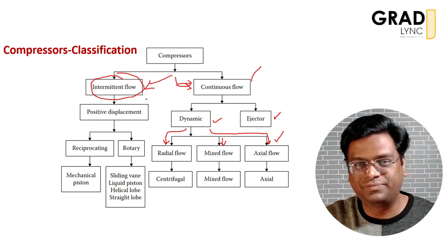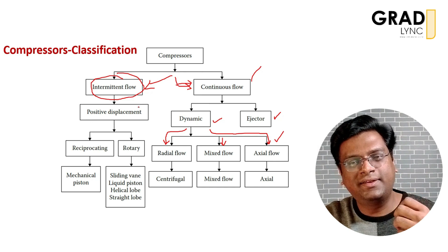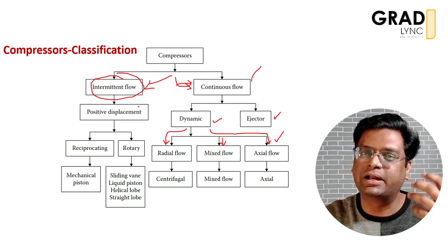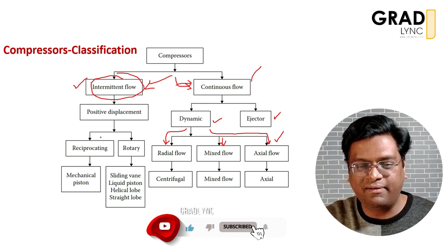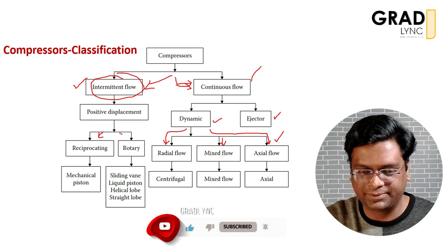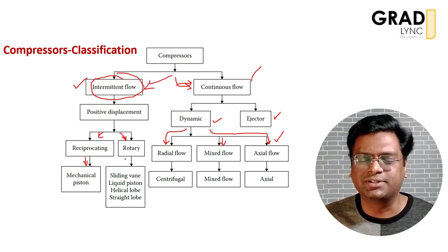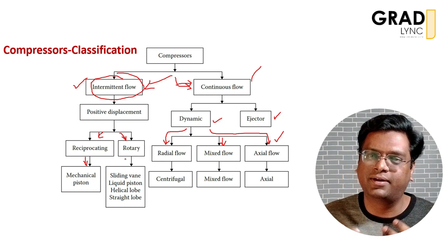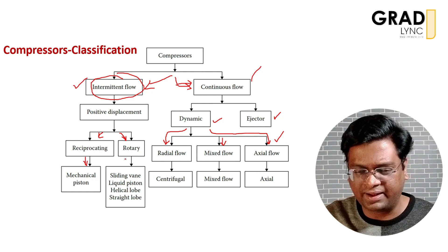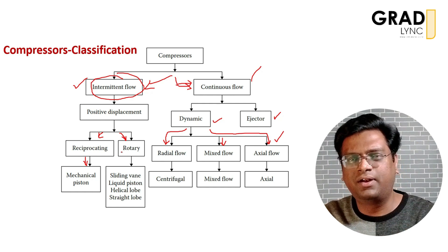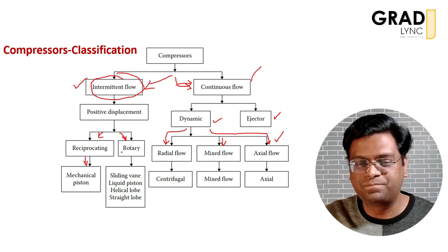Moving on to intermittent flow, these are basically reciprocating type compressors where the air is not flowing continuously but with some interval. We have the reciprocating type and the rotary type. One example of reciprocating type is a mechanical piston, where the air is sucked into the cylinder and then compressed. The second is the rotary type, where the sliding vane and liquid piston are examples where the rotary mechanism is used to compress the air.